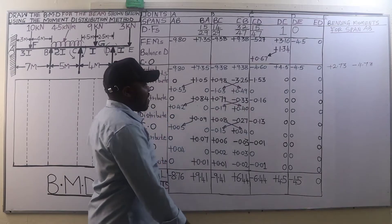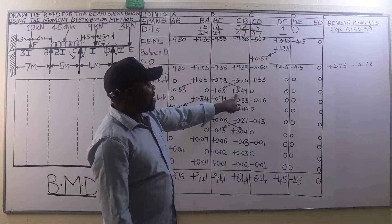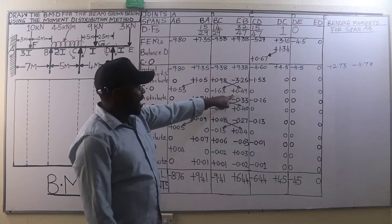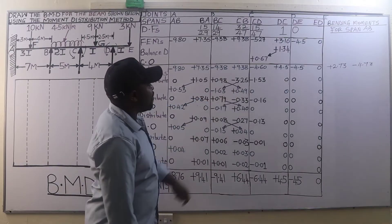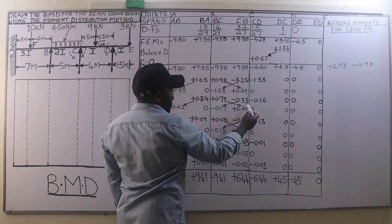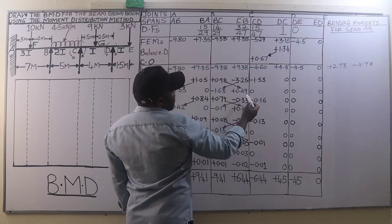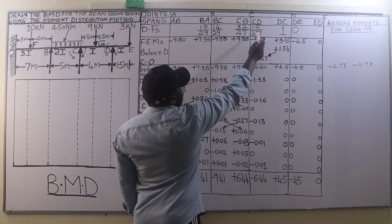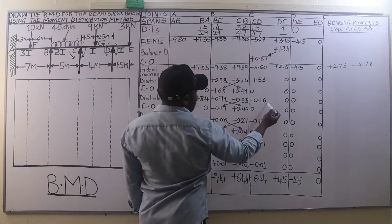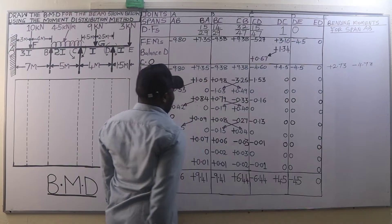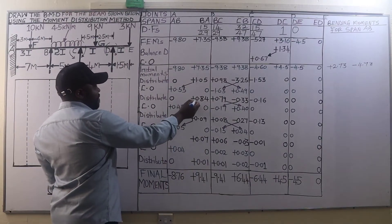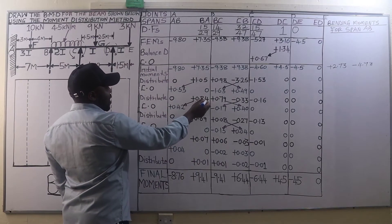On joint C we have an excess moment of negative 0.49 — changing the sign. Negative 0.49 times 32/47 is negative 0.33. Negative 0.49 times 15/47 on member CD is negative 0.16. The others are zeros.